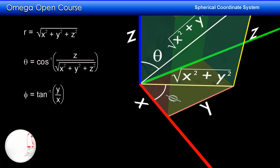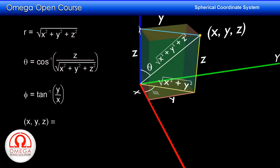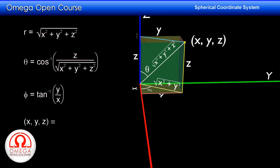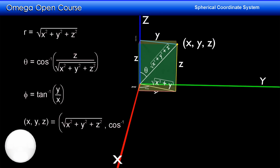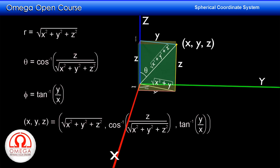Hence, the Cartesian coordinates x, y, z have spherical coordinates: r = √(x² + y² + z²), theta = cos⁻¹(z / √(x² + y² + z²)), phi = tan⁻¹(y / x).